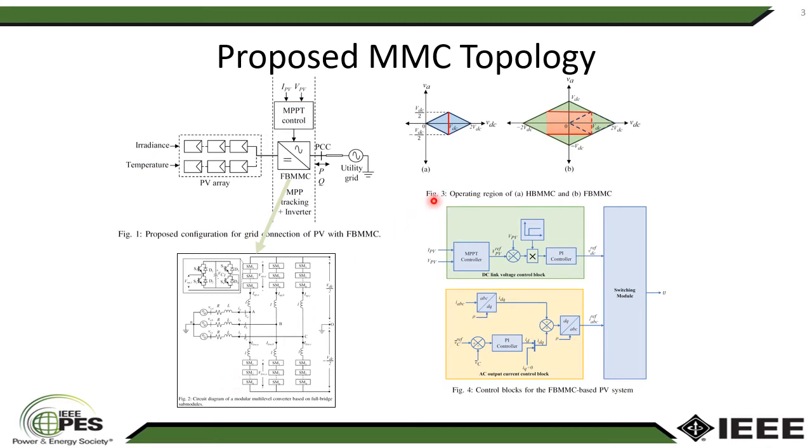And then figure 3 illustrates the operating region of half-bridge submodule based MMC, hereafter called HBMMC, and FBMMC. The subfigure A clearly shows that the constant VDC voltage is required in the DC side to generate the sinusoidal output voltage of peak VDC by 2, which is the maximum possible value from the converter.